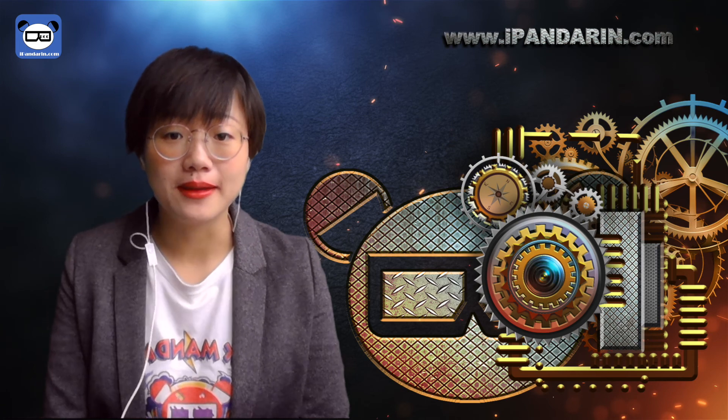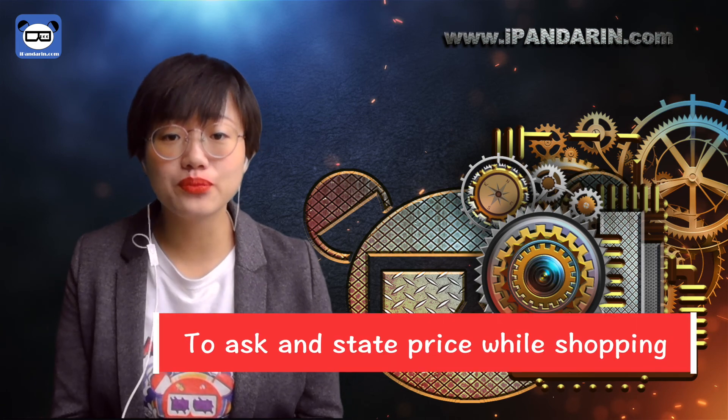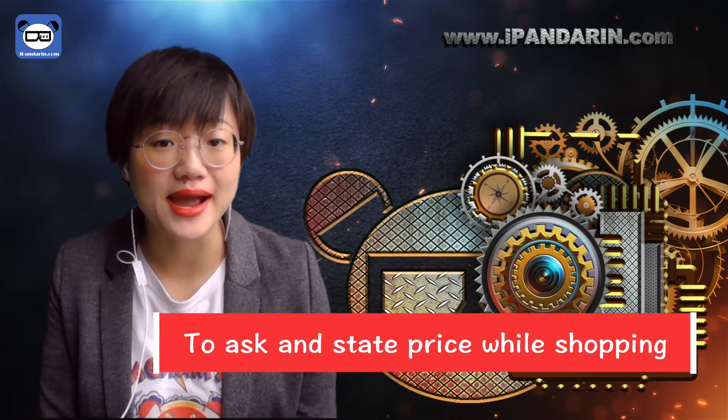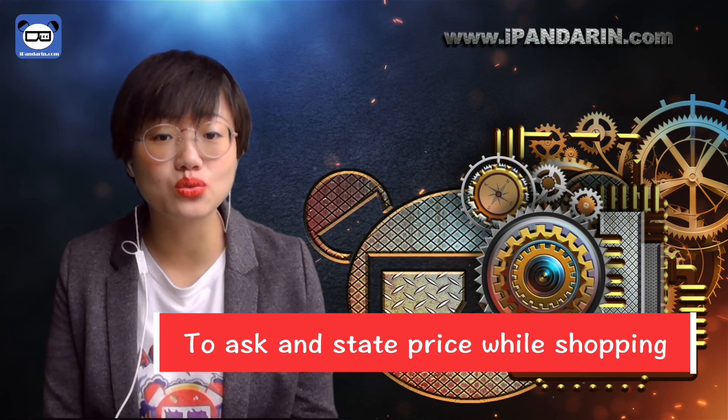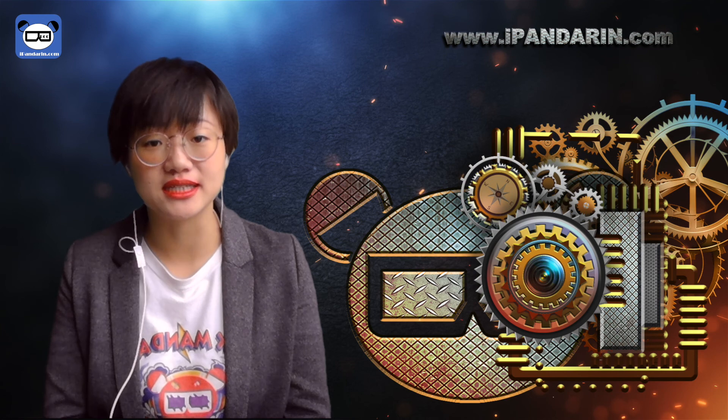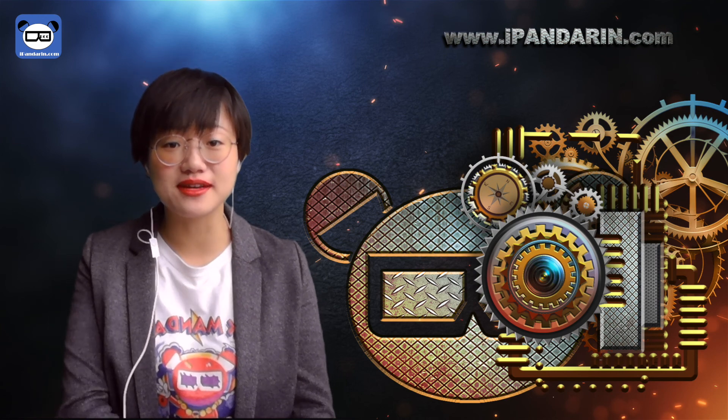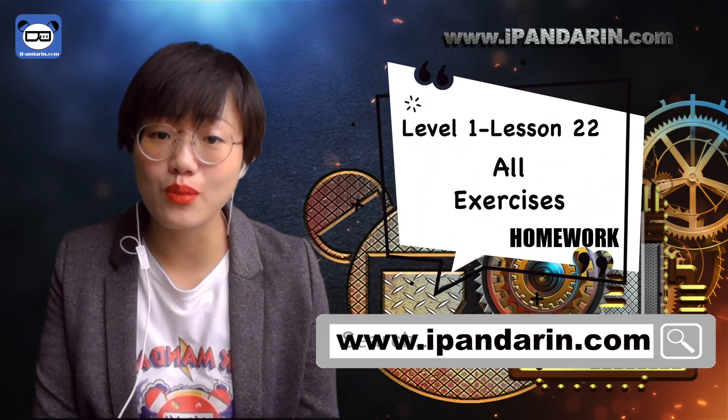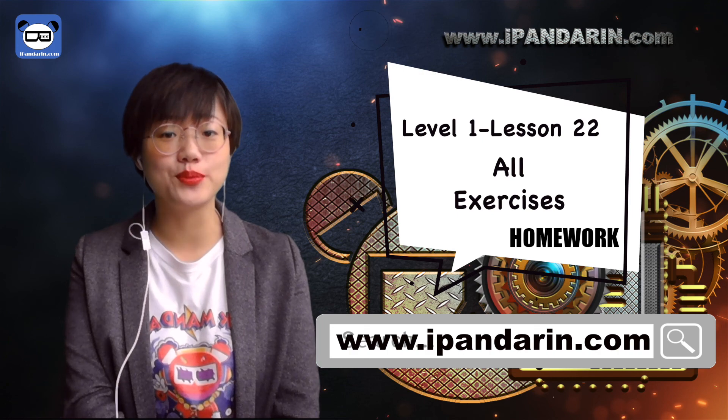All right, that's all for today. Today we learned the word to buy, 买, 买电视, 买电脑, 买桌子, 买 many things. And we learned to ask and state the price while buying something using 多少. 苹果多少钱? 电脑多少钱? I hope you can practice them next time while shopping. To practice all of this, please finish all exercises of level 1 lesson 22. See you, bye bye.